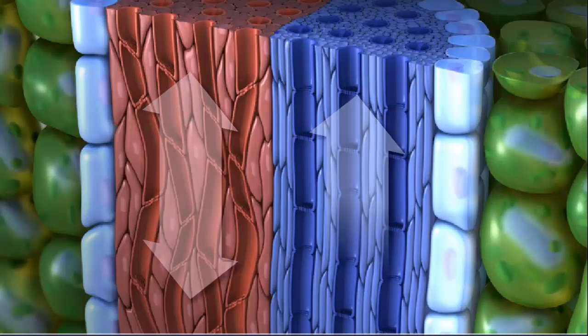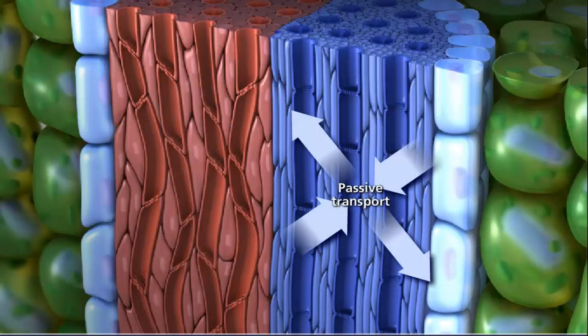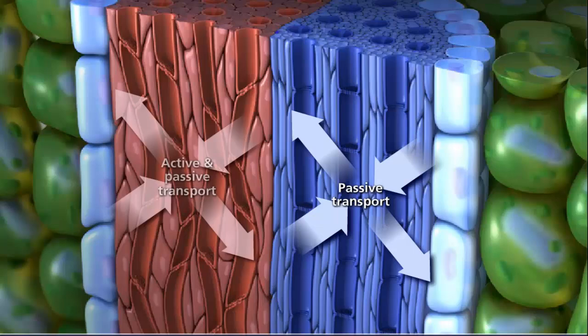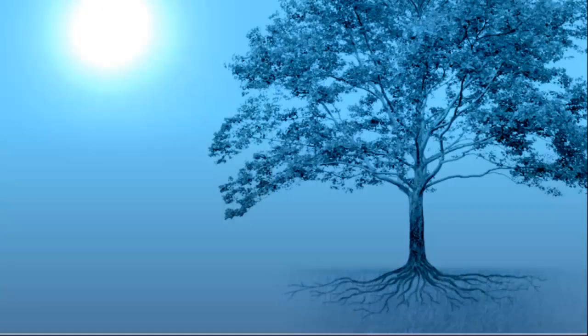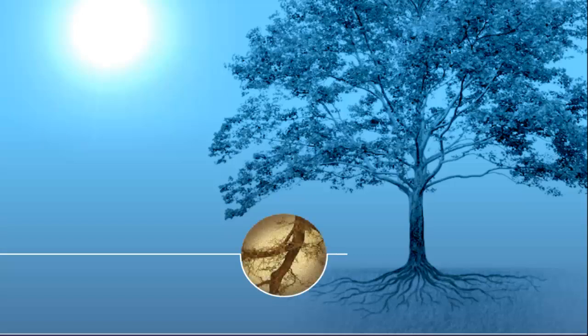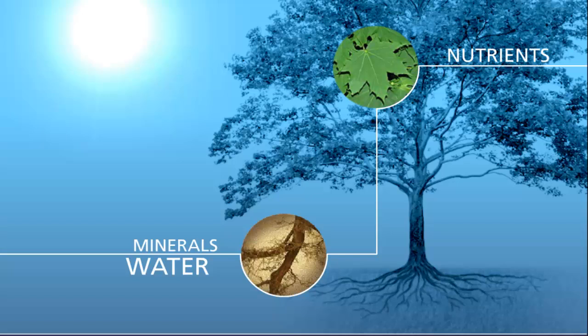Water potential is an important driver in both xylem and phloem transport, but only phloem transport utilizes both active and passive transport. Our heart pumps blood throughout our bodies to provide nutrients and water to our cells. Vascular plants can accomplish this same feat without a heart, using transpiration, water potential, and translocation to move water, nutrients, and minerals to all cells of the plant.